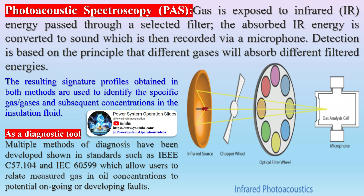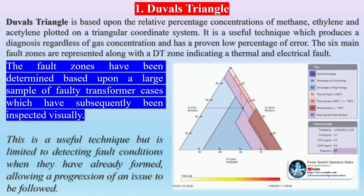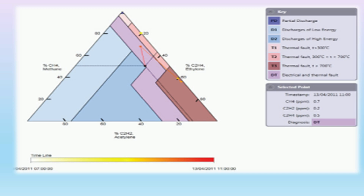Analysis methods: Gas Chromatography (GC) — gas is passed through a column with a carrier gas towards a detector; detection is based on the principle that different gases will travel at different rates. Photo-acoustic (IR) — gas is exposed to infrared IR energy passed through a selected filter; the absorbed IR energy is converted to sound which is then recorded via a microphone; detection is based on the principle that different gases will absorb different filtered energies. The resulting signature profiles obtained in both methods are used to identify the specific gases and subsequent concentrations in the insulation fluid.